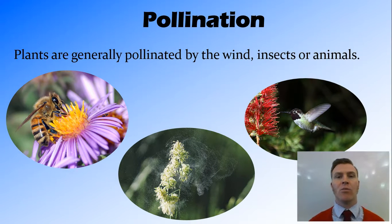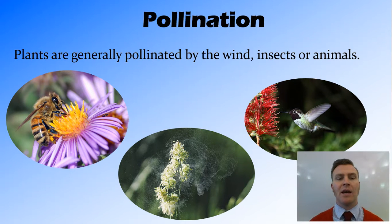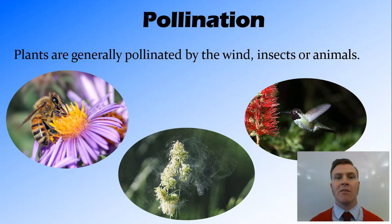There are a few different ways that pollination can occur, but it's generally either by the wind — the pollen being blown from one plant to another — by insects such as bees, flies, butterflies, wasps, etc., or by animals, and in this case often it is birds.